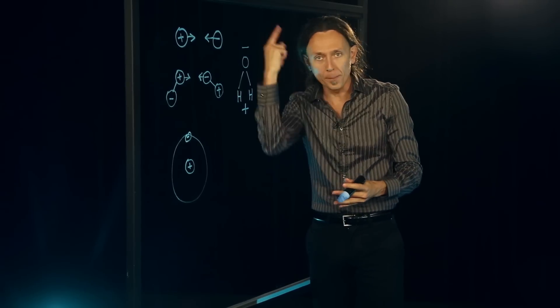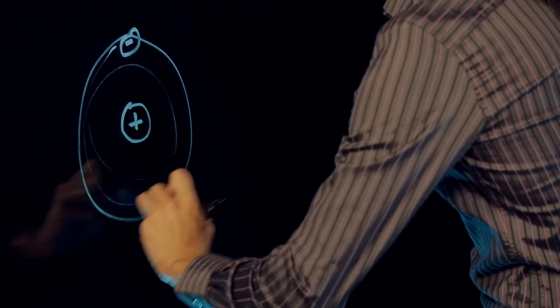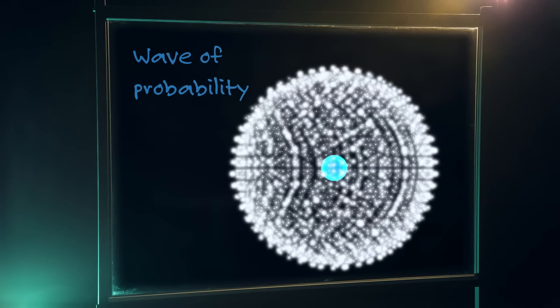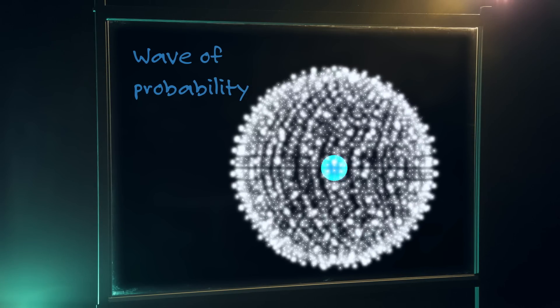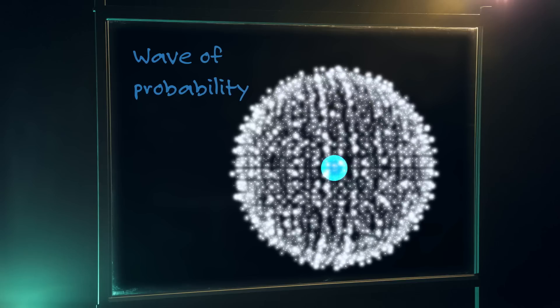In fact, it doesn't quite orbit around the proton like the moon around the Earth, but it's spread out in a wave of probability around the proton. And this wave of probability is spherically symmetric. It's the same in every direction.